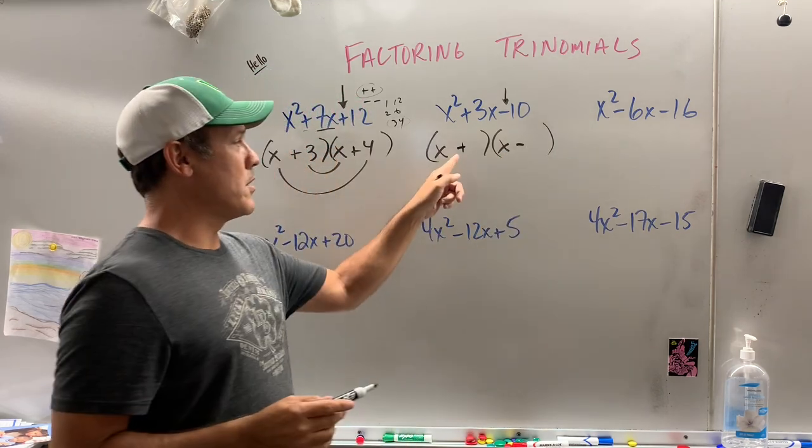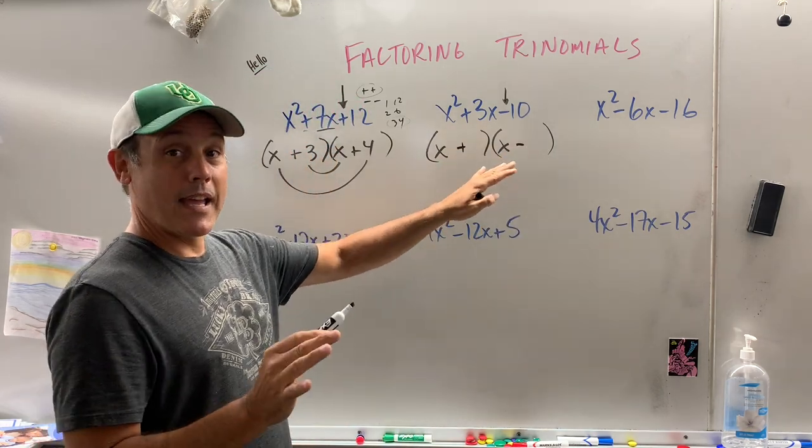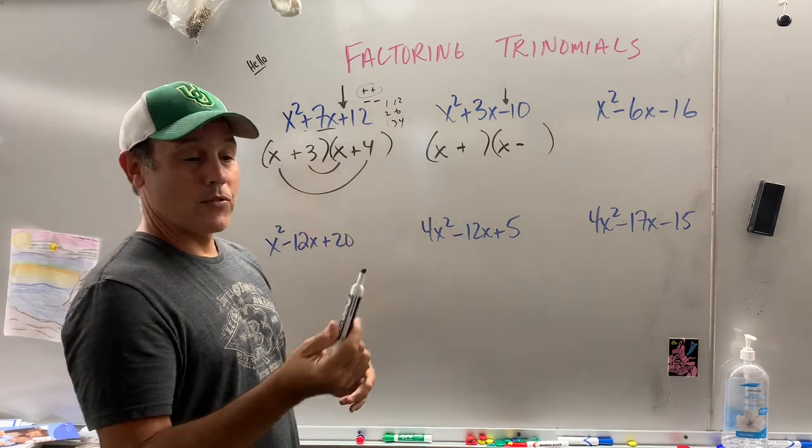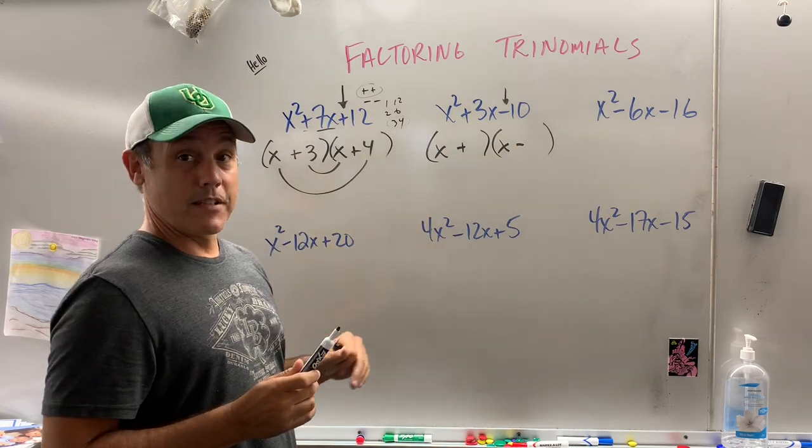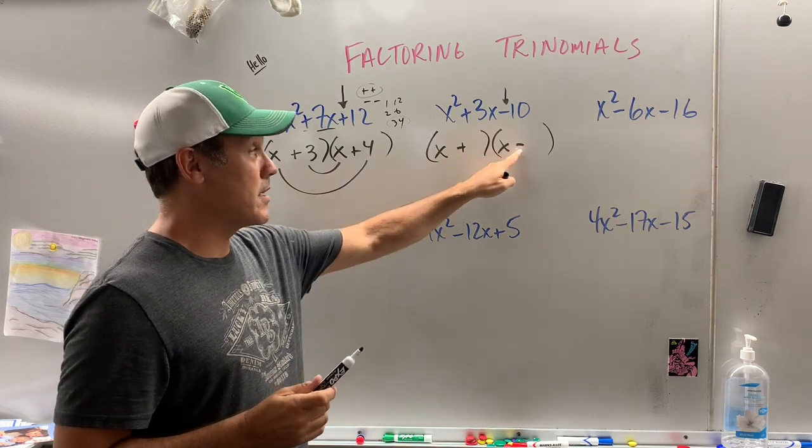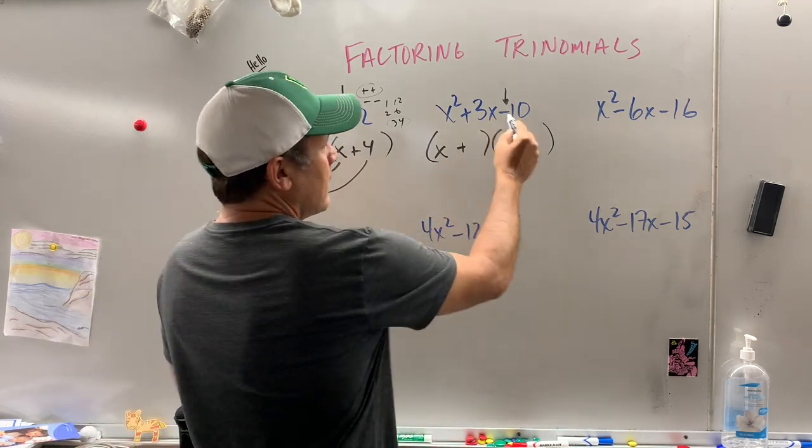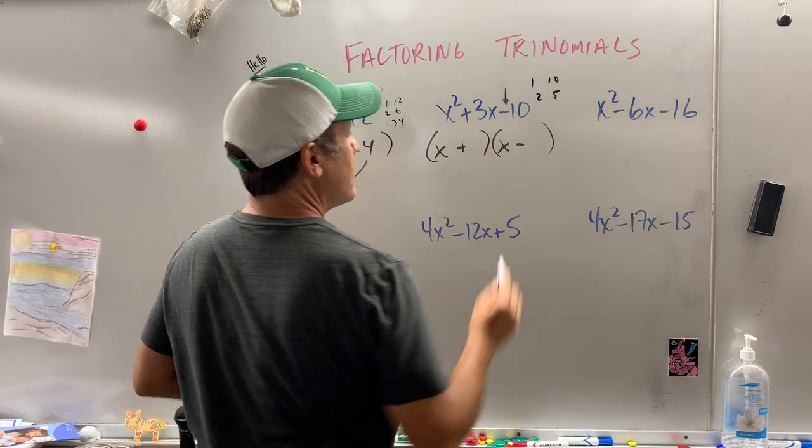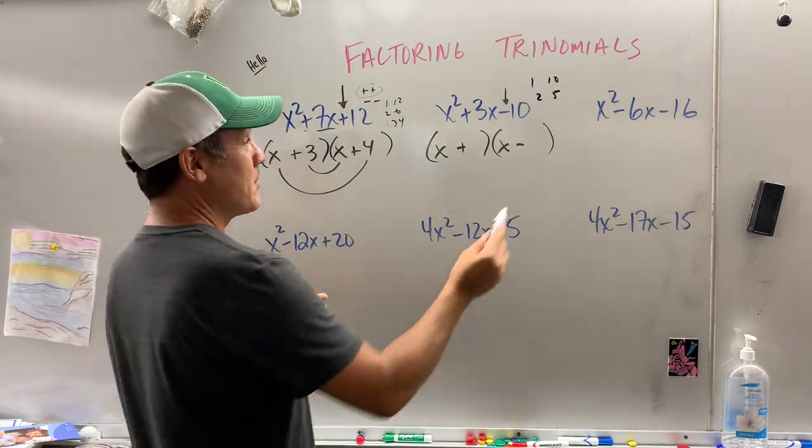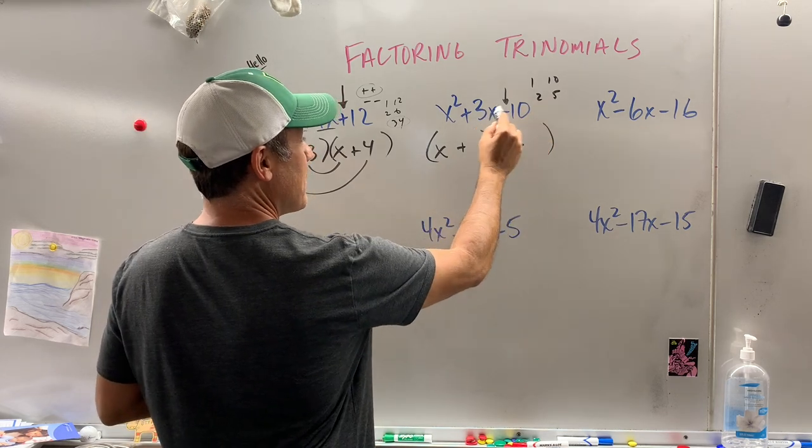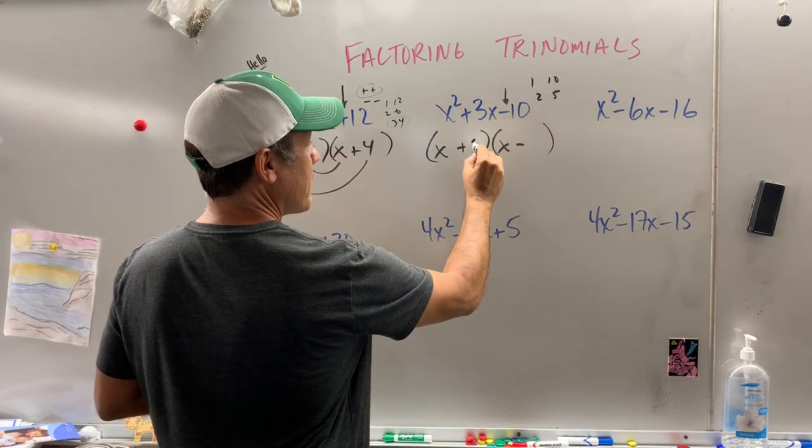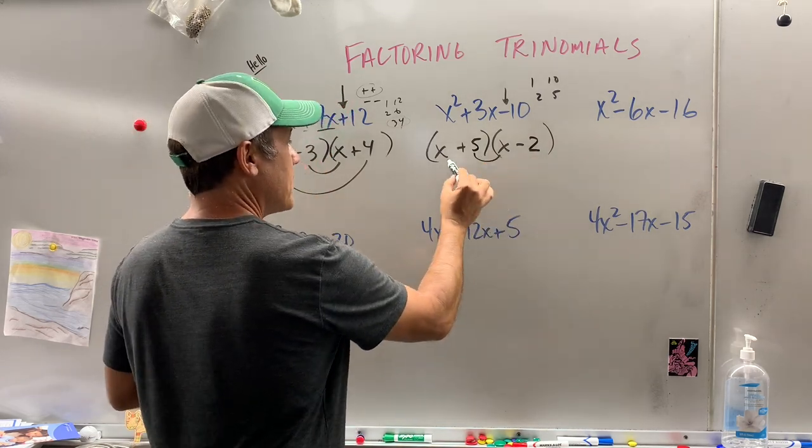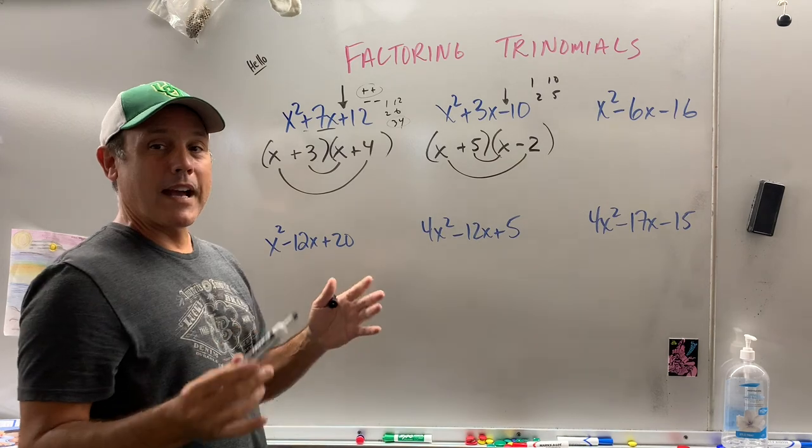Now some kids might say, well, could you put a minus and a plus there? You can, but I always put plus minus and I always do math in pencil or dry erase markers so I can easily erase because I know sometimes I actually might need to switch those. Well, now I'm looking for factors of 10: 1 and 10, 2 and 5. I could see it a mile away. 5 and 2 is going to get me to 3. And where does the 5 go? Right there. Now watch. 5x minus 2x gives me 3x. We got it.